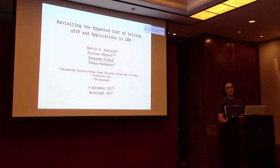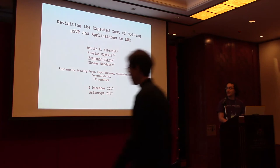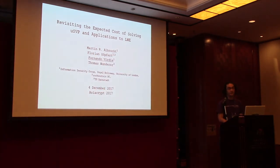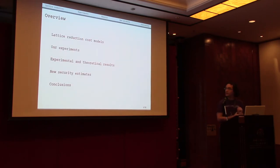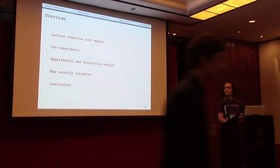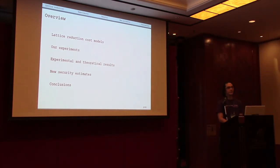We're going to talk about costing the use of BKZ for cryptanalysis, and in particular for LWE. This is work done together with Martin Albrecht, Florian Gottfried, and Thomas Wunder. Martin and Thomas are also present at this conference. As an overview, we're going to talk about lattice reduction cost models, the experiments we ran, and what experimental and theoretical results we can draw from them, what this means for security estimates of concrete proposals for post-quantum secure encryption, and then some concluding remarks.